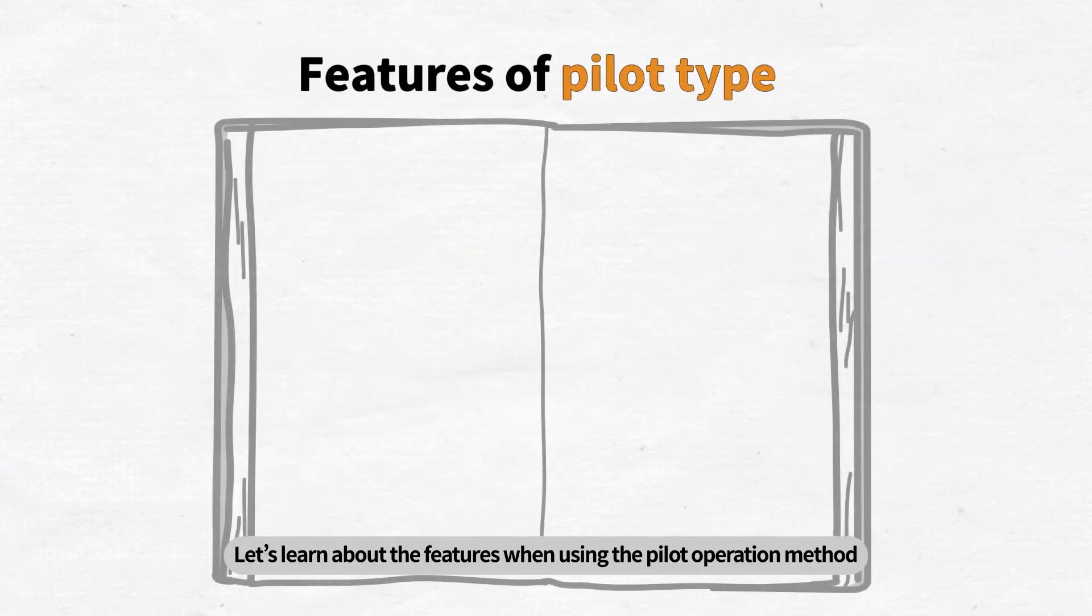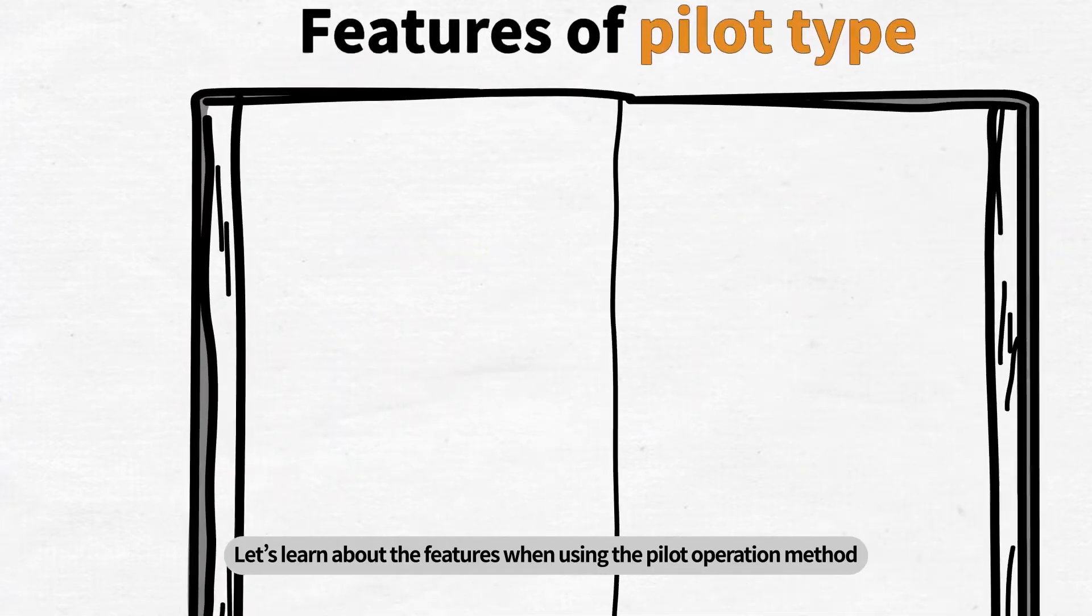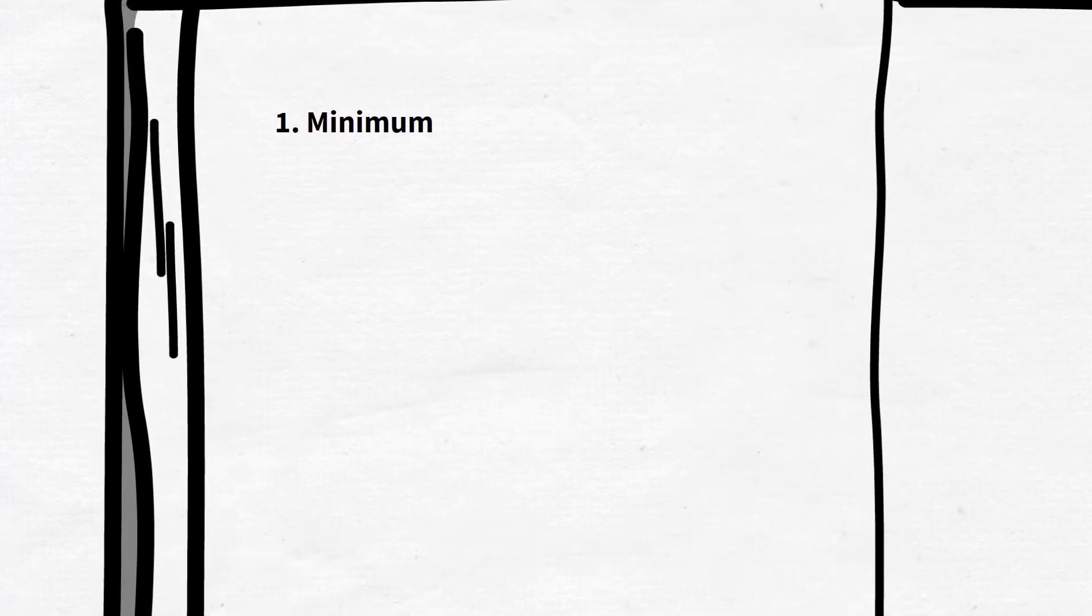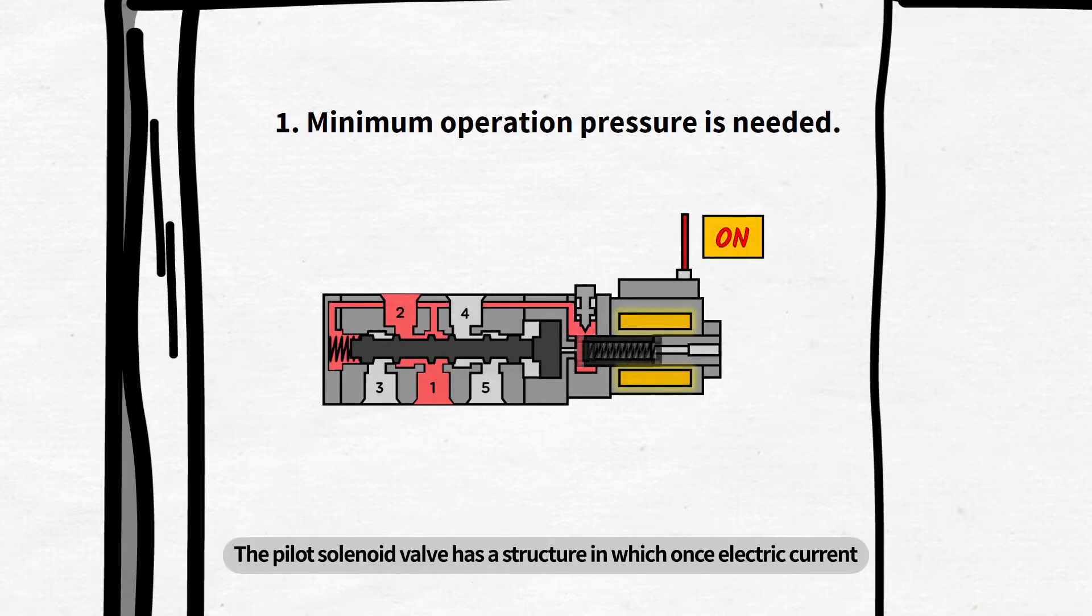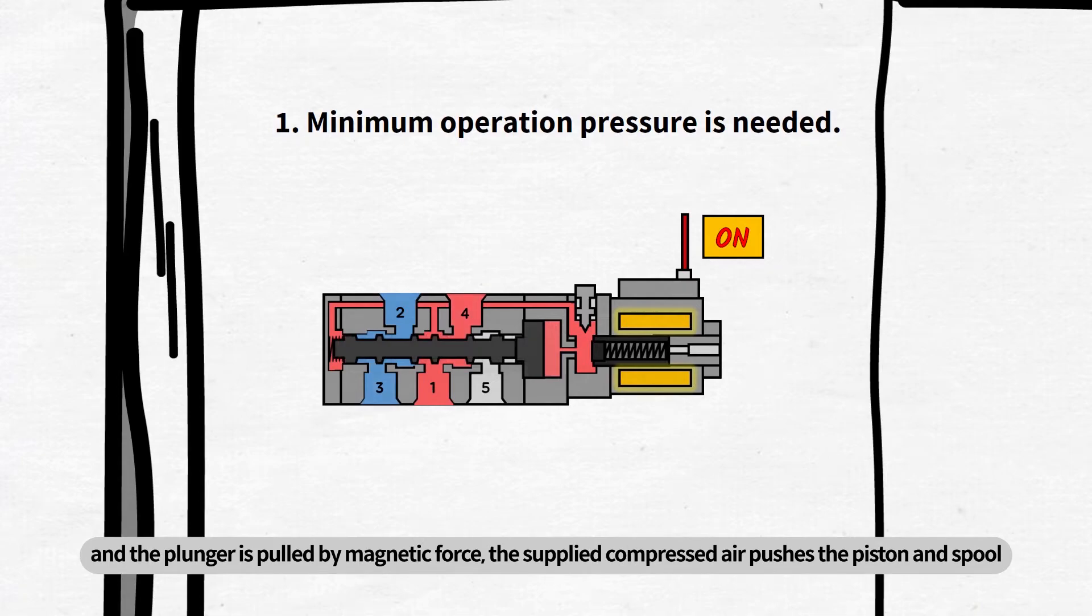Let's learn about the features when using the pilot operation method. First, minimum operation pressure is needed. The pilot solenoid valve has a structure in which once electric current and the plunger is pulled by magnetic force, the supplied compressed air pushes the piston and spool. Therefore, in order for the valve to operate,